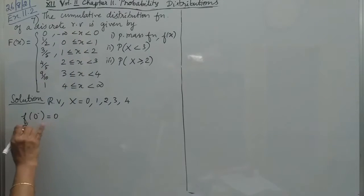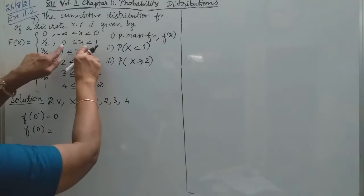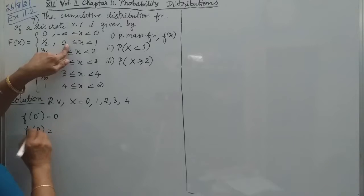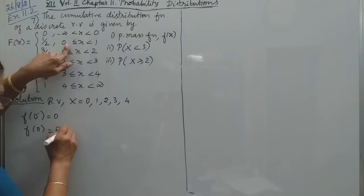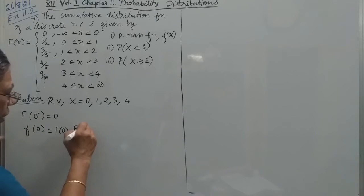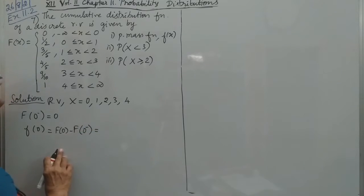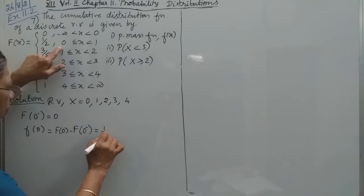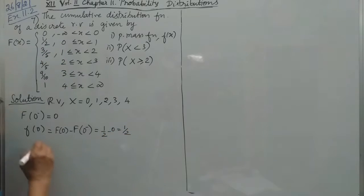So f(0), capital F(0), is equal to 0. This is 0, correct? So F(0) = 0. So small f(0) is capital F(0) minus capital F(0 minus 1), which is 0. So f(0) is equal to F(0) minus F(0 minus). That is equal to f(0) is 1/2, so 1/2 minus 0, that is 1/2.